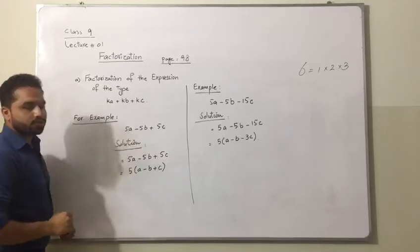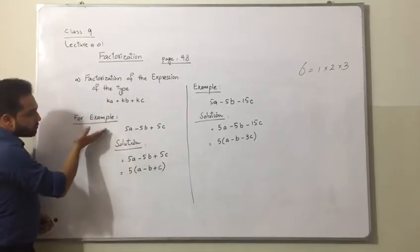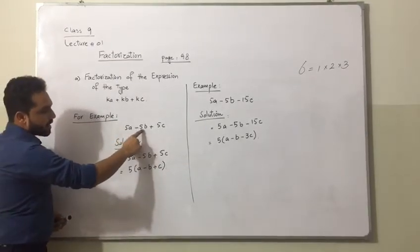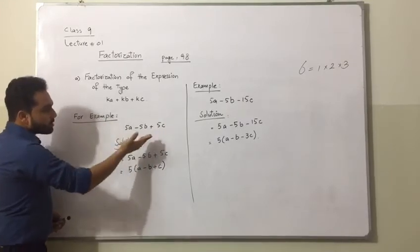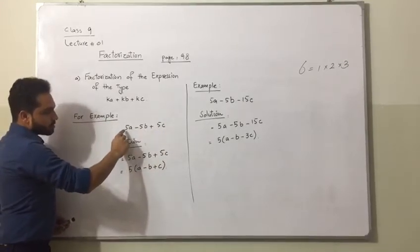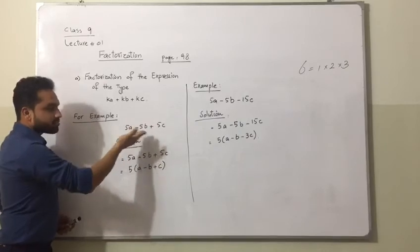To understand this we will solve some examples. For example, we have 5a minus 5b plus 5c. So we can see that we have a constant 5 which is same in all 3 terms.